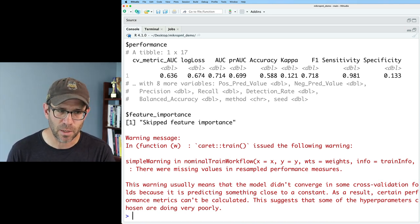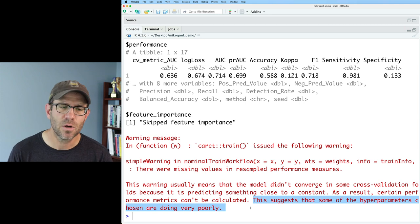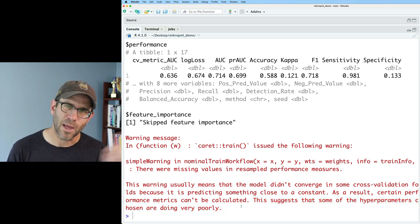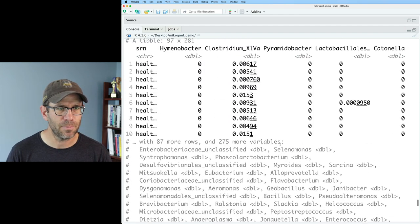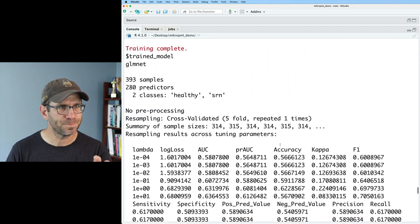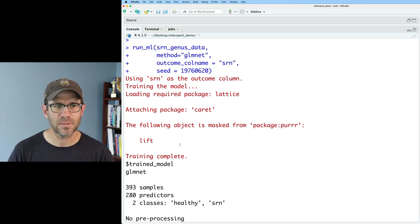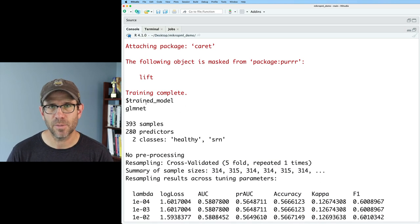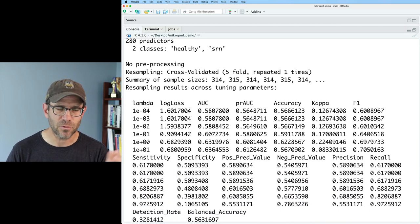And then it'll take the best model and apply it to that 20% that was held out. This is going to take a few moments to run, but I'll show you what we get when we come back. Very good. So it took about two minutes to run. I'll go ahead and maximize this output window. And so one of the first things to notice is that I got a couple of warning messages. Again, the warning isn't the end of the world, but it tells you some information about how the algorithm or how the function ran. So it says that this warning usually means that the model didn't converge in some of the cross validation folds because it's predicting something close to a constant.